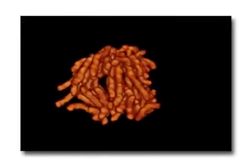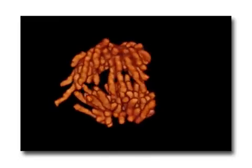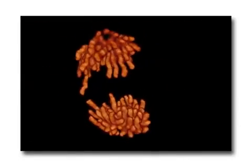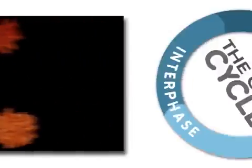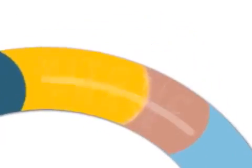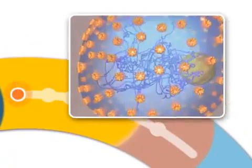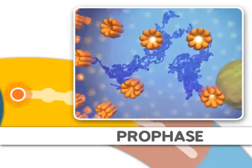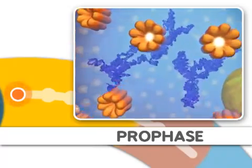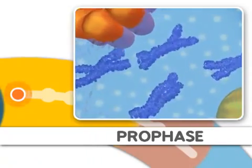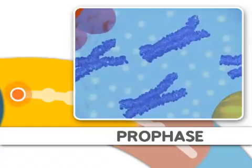Mitosis is the process of dividing the duplicated DNA of a cell into two new nuclei. Mitosis is split into distinct stages. The first stage is prophase, where the DNA condenses, organizes, and the classic chromosome structure appears.